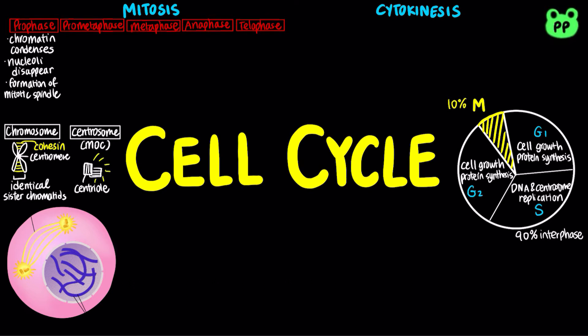The radial arrays of shorter microtubules that extend from the centrosomes are known as asters. At the end of prophase, the centrosomes move away from each other, driven by the lengthening of microtubules between them.